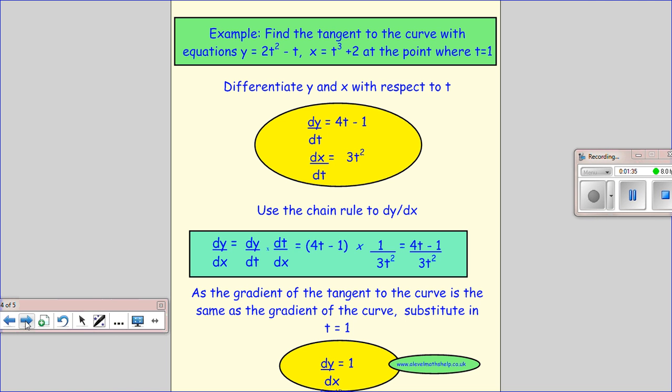So I've got quite a long question, which is sort of a revision on how you find a tangent to a curve. But this time we're going to do it using parametric equations. So what do we do to start with? We want to differentiate y and x with respect to t.